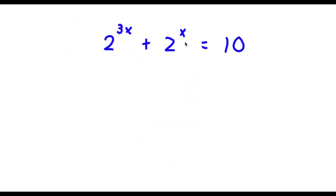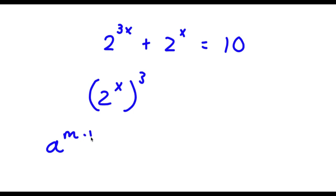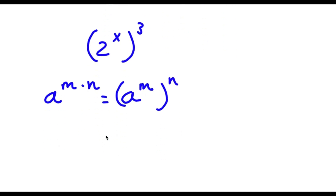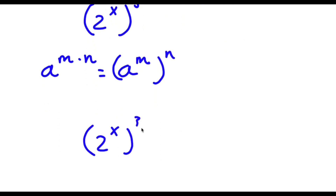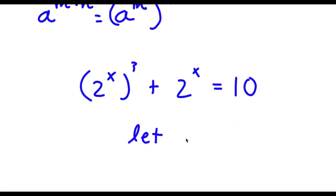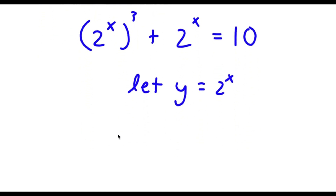So I have 2 to the power of 3x plus 2 to the power of x is equal to 10. The first thing I'm going to do is rewrite 2 to the power of 3x as 2 to the power of x to the power of 3. I can do this because if I have something in the form a to the power of m times n, this is the same thing as a to the power of m to the power of n. So now I have 2 to the power of x to the power of 3 plus 2 to the power of x is equal to 10. I'm going to let y equal 2 to the power of x, so now I have y to the power of 3 plus y equals 10.